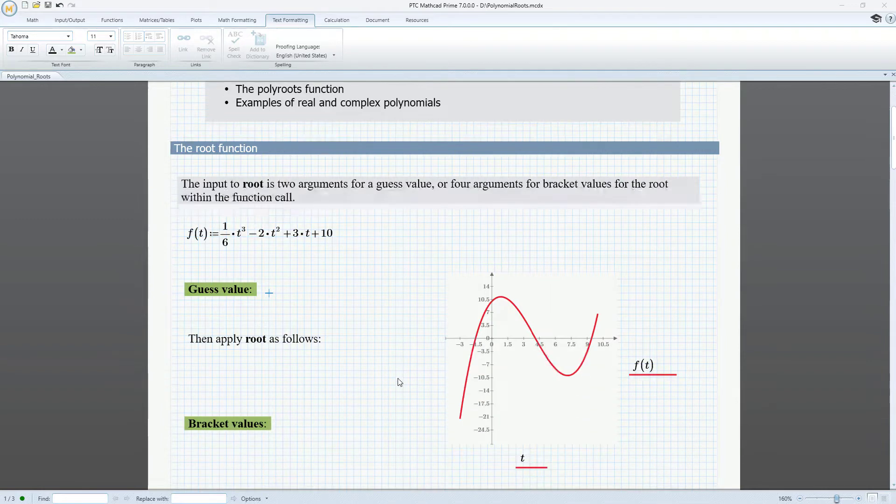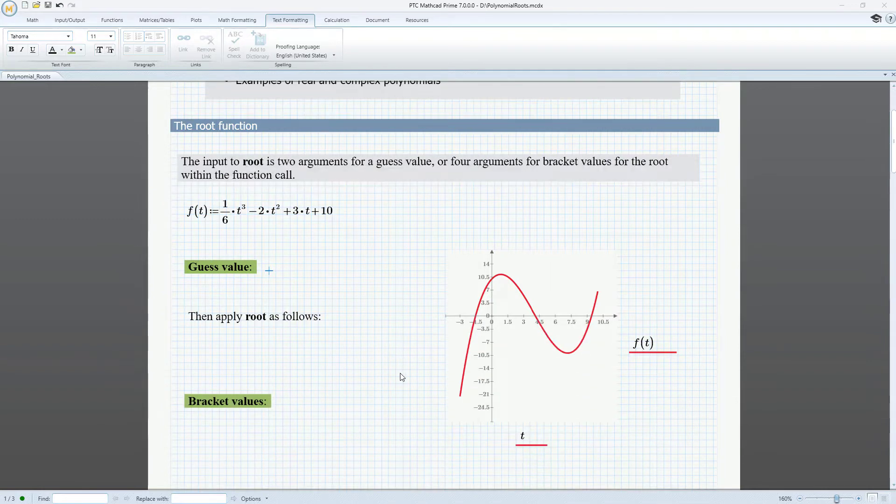So let's start by seeing how you can use the root function to extract the roots one at a time. The root function requires either two or four arguments, depending on whether you want to provide a guess value or bracket values for the root.